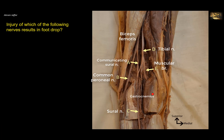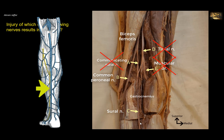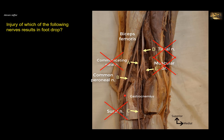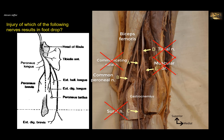E supplies a muscle of the posterior compartment and has nothing to do with foot drop. D is the tibial nerve, which supplies the remaining muscles of the posterior compartment, and again has nothing to do with foot drop. A and C are both cutaneous nerves — they are not motor. A is the communicating sural, and C is the sural nerve itself, which is cutaneous and supplies the skin on the distal half of the posterior aspect of the leg, continuing behind the lateral malleolus to supply the lateral side of the foot. B is the common peroneal nerve — called common peroneal because it splits later, as it passes lateral to the neck of the fibula, into a deep peroneal and superficial peroneal. The superficial peroneal supplies the everters, and the deep peroneal nerve supplies the muscles of the anterior compartment of the leg.